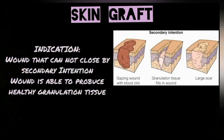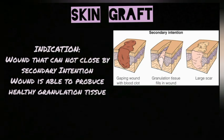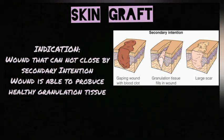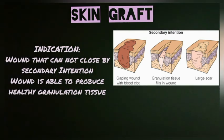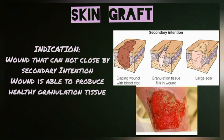A graft is only indicated if the damaged skin tissue cannot be closed by secondary intention — where the surgeon leaves the wound open for some time, allowing the wound to replace itself with healthy normal tissue before closure. The wound must also be able to produce healthy granulation tissue, because the graft tissue has no blood supply and requires nourishment from the granulation tissue. If granulation tissue is not produced, the graft will not survive and another surgical procedure must be considered.